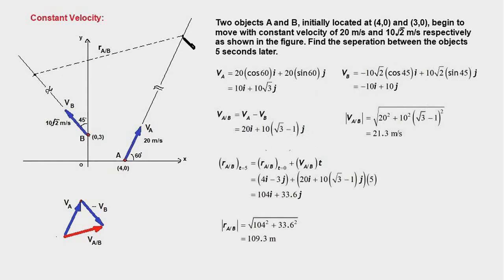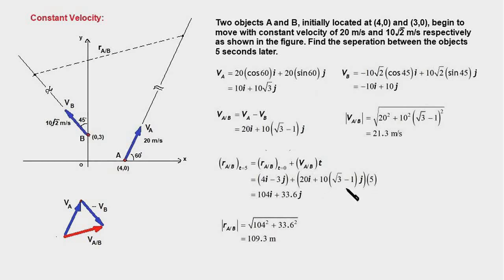The relative displacement between the two objects 5 seconds later equals the initial relative displacement plus the relative velocity multiplied by time t = 5 s. The initial relative position r_{A/B} at t = 0 is 4i − 3j. Adding the relative velocity (20i + (10√3 − 1)j) × 5, we get the total relative displacement vector 104i + 33.6j. The magnitude of this vector is √(104² + 33.6²) = 109.3 meters.